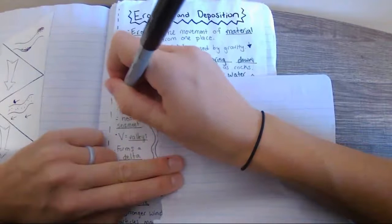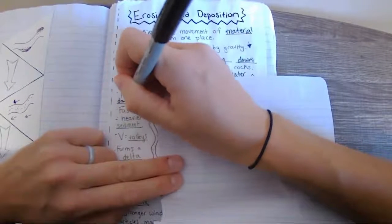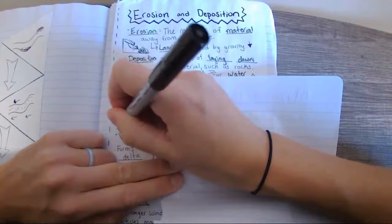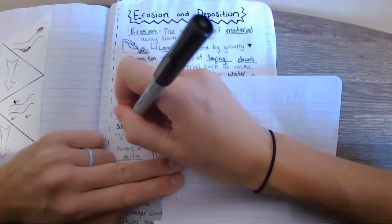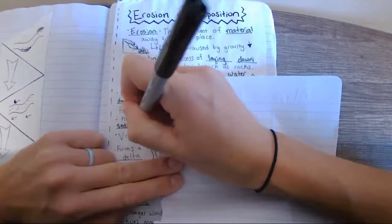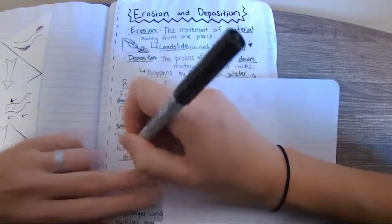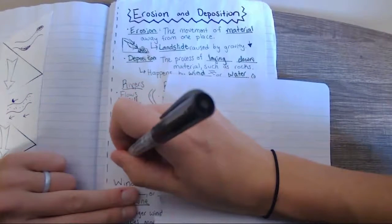And again, this is just our first day with this new material. So it's okay if this is all new for us. We'll definitely be practicing this vocabulary a lot before the test. They form those v-shaped valleys. Lastly, it forms a delta.